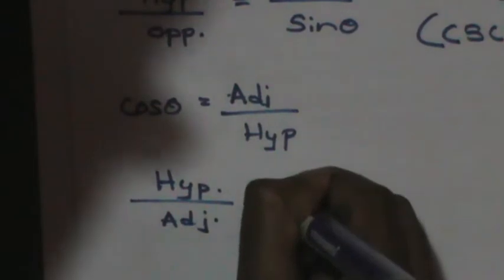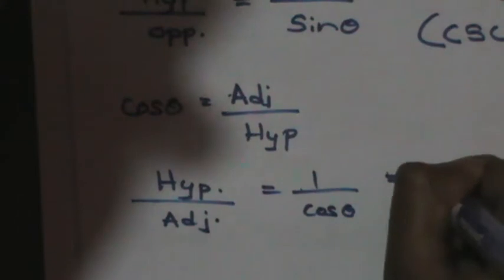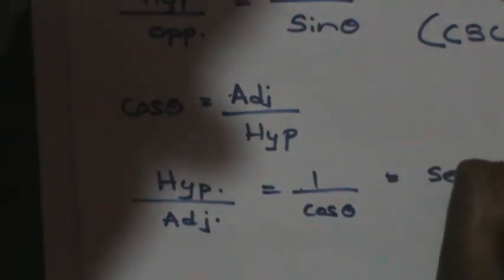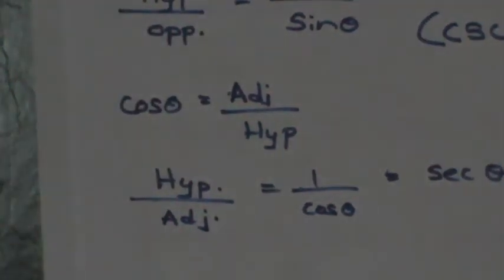The second reciprocal identity: since cos θ equals adjacent side divided by hypotenuse, the reciprocal — hypotenuse divided by adjacent side — equals 1 over cos θ. This is called sec θ, or secant of theta.